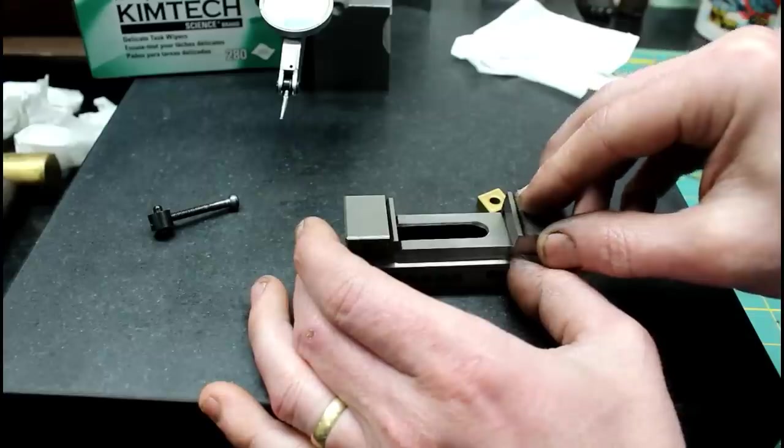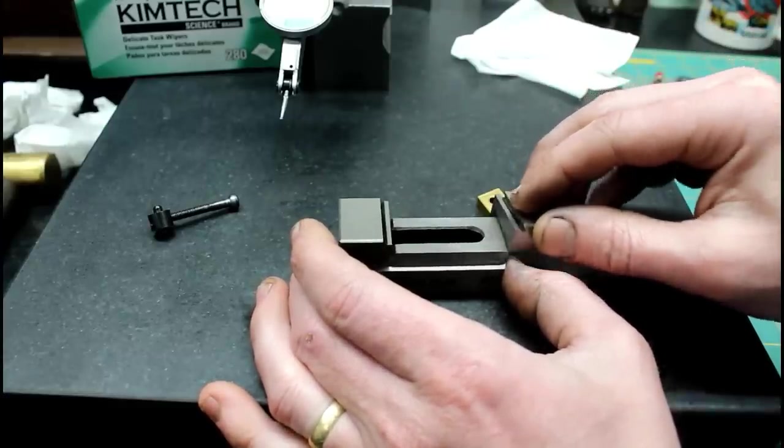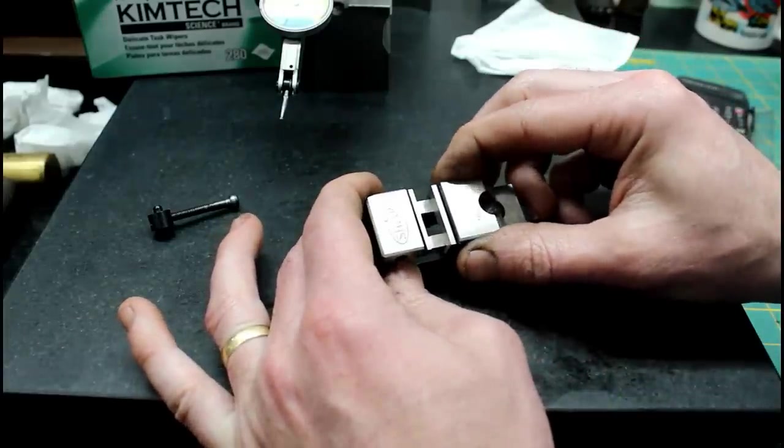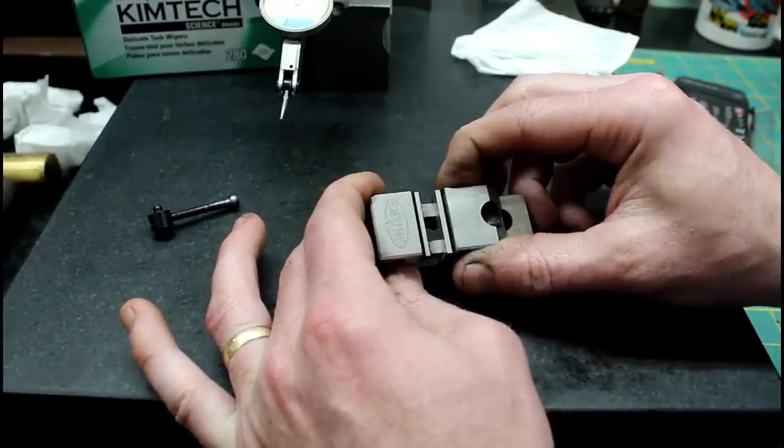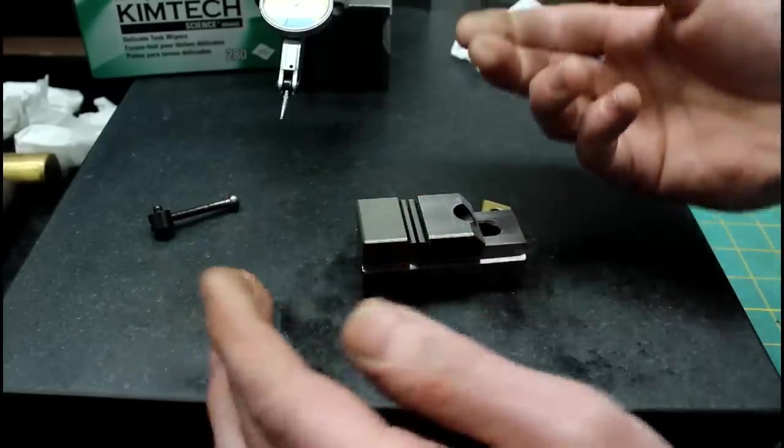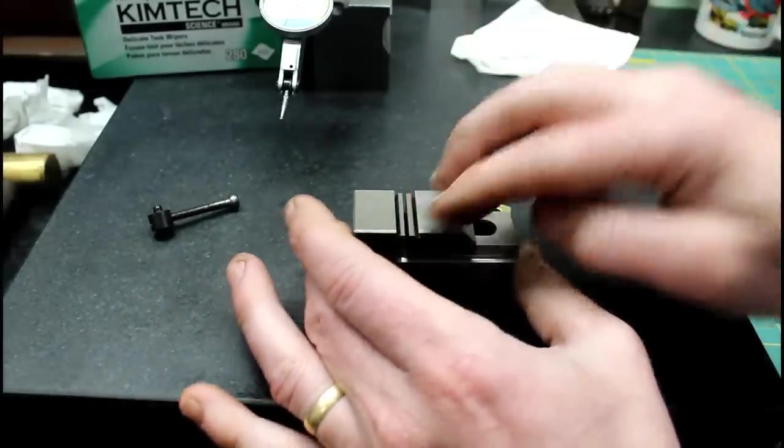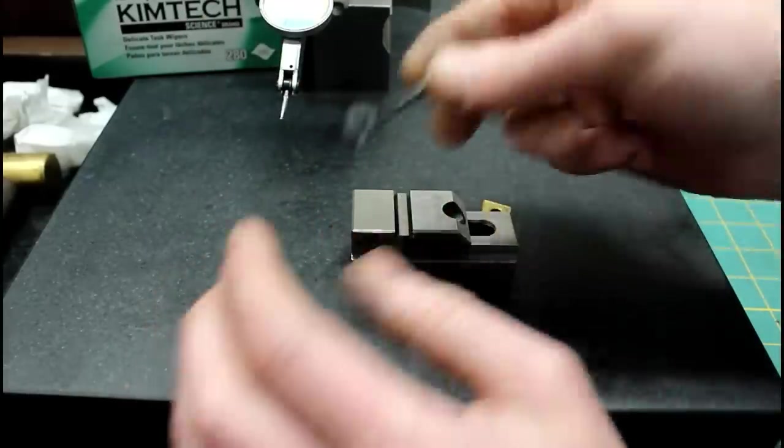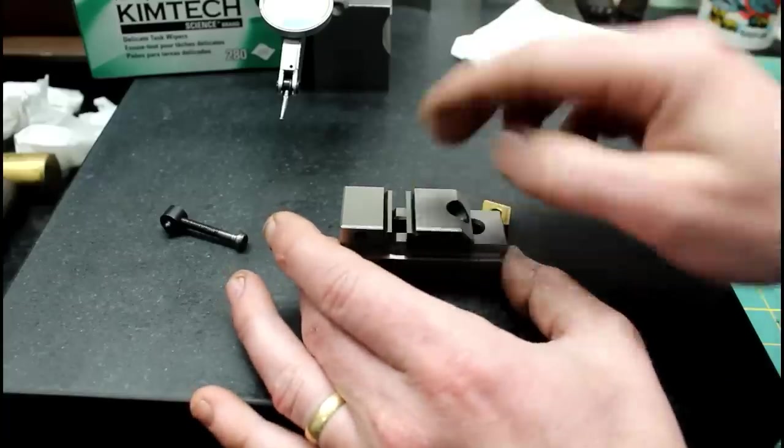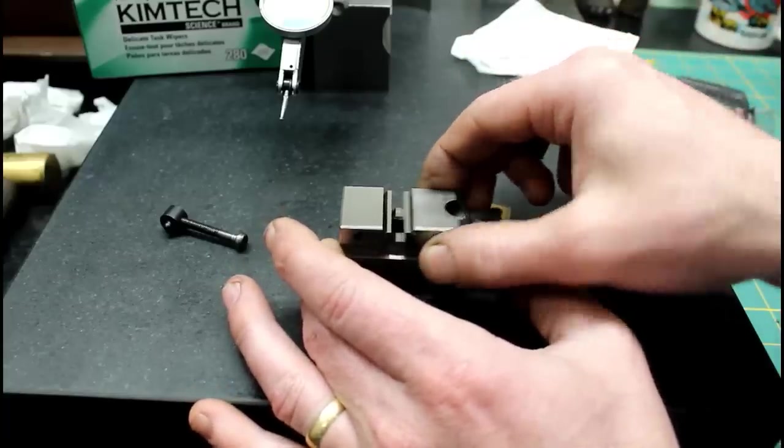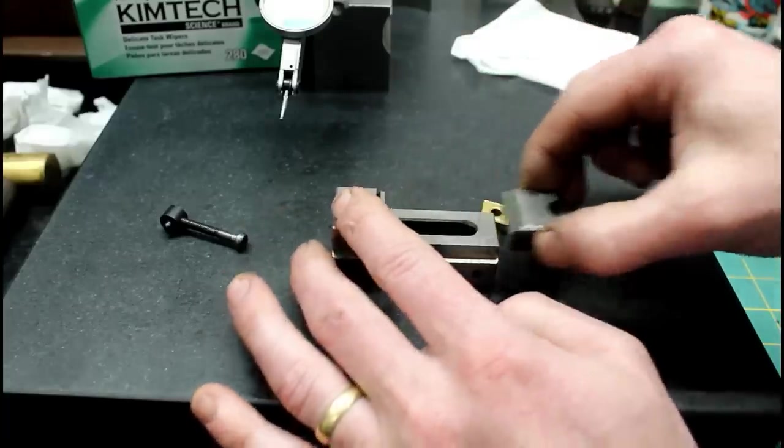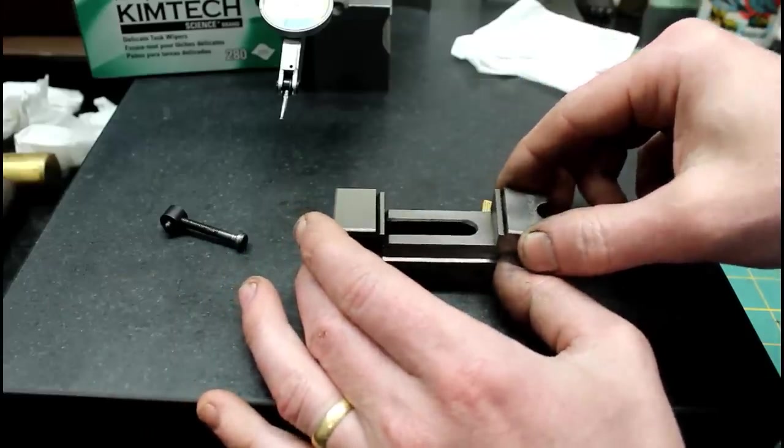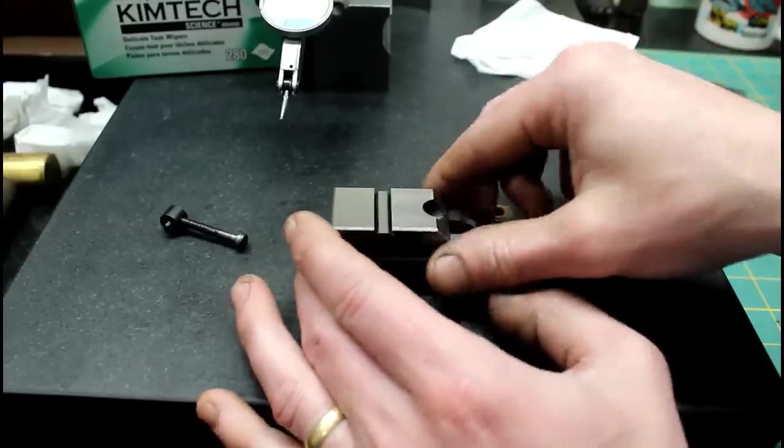Now let's check the fit of the movable jaw. It's got basically just enough play to where it operates smoothly and it does. Here's the screw. The jaw operates smoothly and it feels pretty good. So I was happy with that. Most of the grinding on this vise looks decent. It looks like a usable vise.